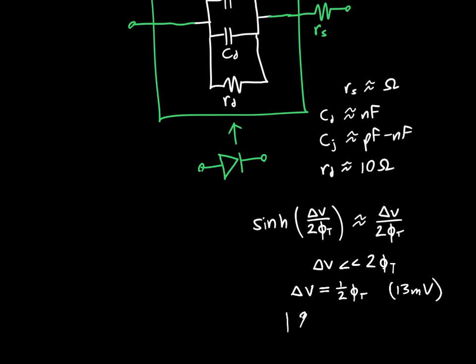So as long as delta V remains really small in the millivolt range, we're going to incur very minimal error with these models that we're using. But if delta V starts getting larger,